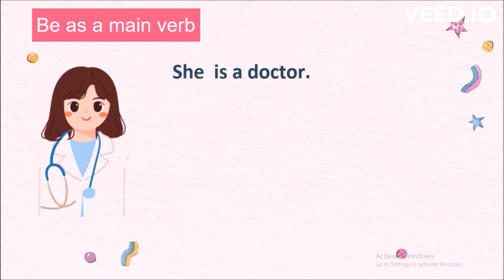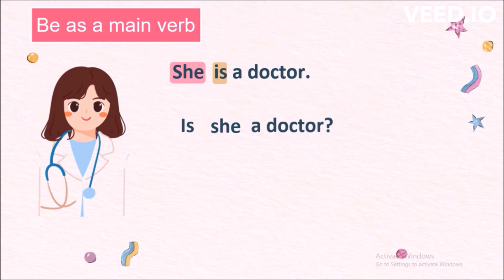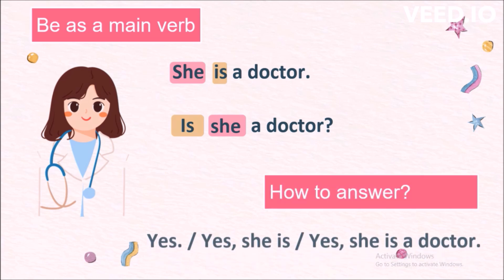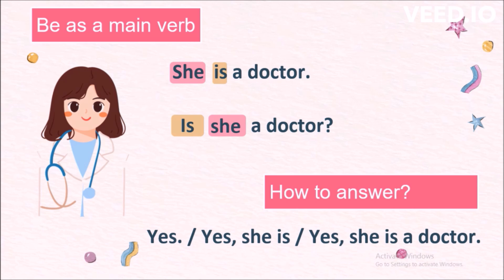In 'She is a doctor,' she is the subject and is is the main verb. To form a yes/no question, we change the word order: Is she a doctor? First the main verb, then the subject, and finally the rest of the sentence. How to answer: we can either say yes, or yes she is, or yes she is a doctor.